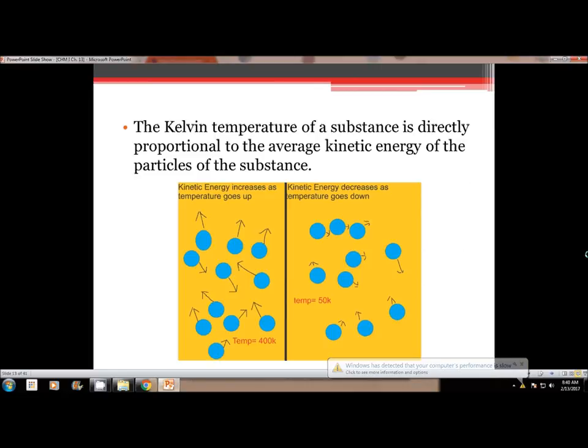The Kelvin temperature of a substance is directly proportional to the average kinetic energy of the particles of that substance. Directly proportional means that if the temperature goes up, the average kinetic energy goes up. So they move in the same way. If it goes down, the other one goes down as well. That's just what directly proportional means, and we're going to see that in the next couple chapters. So this picture is kind of showing in a really bad way, but there's arrows and stuff showing like there's more movement when the temperature gets up versus when the temperature is lower.